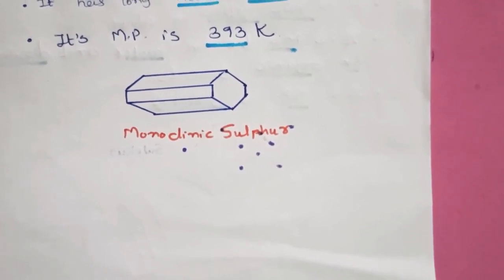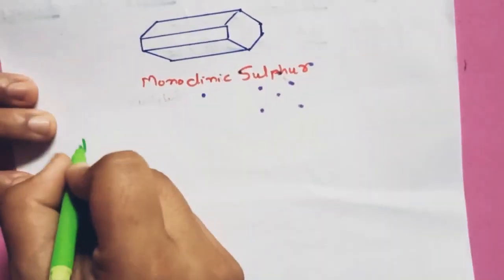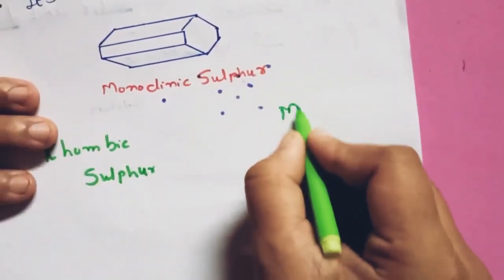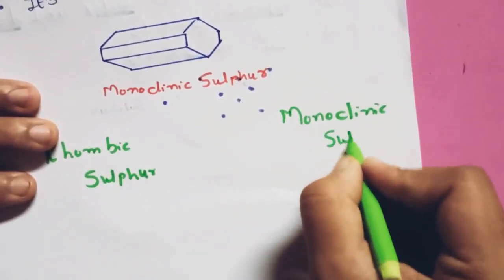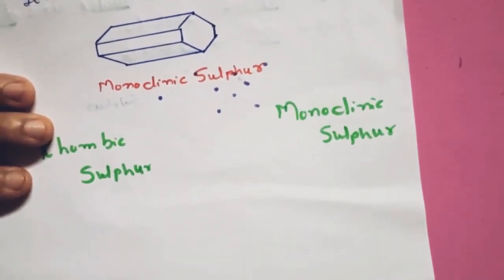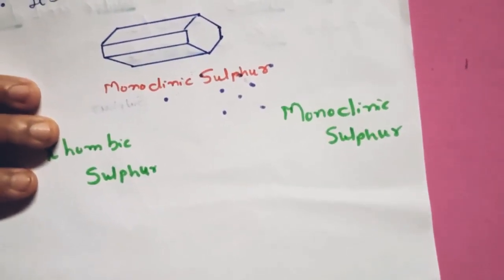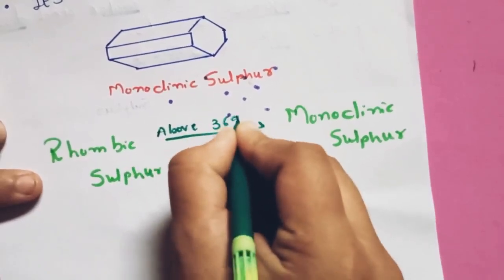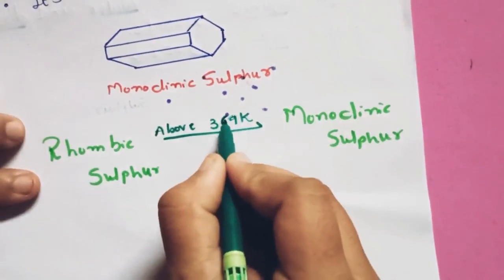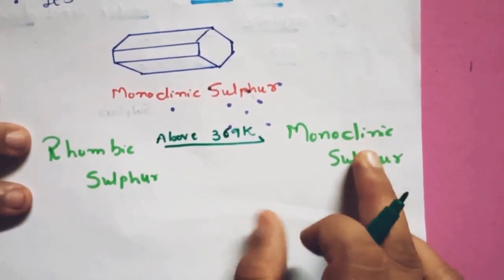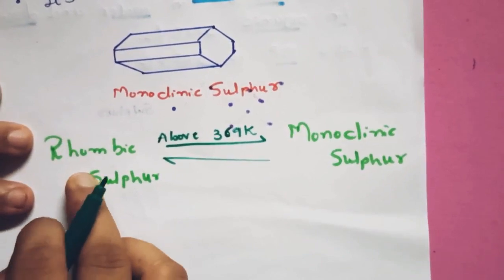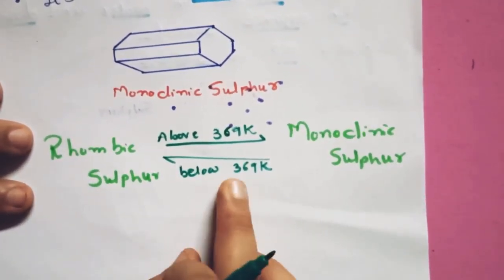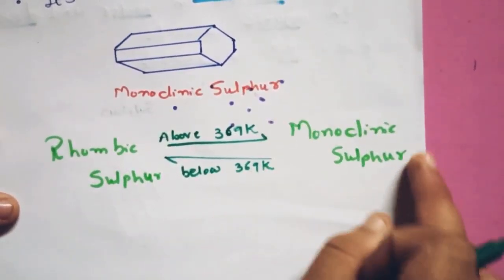That was monoclinic sulfur. The main point about both allotropes is that they can be interconverted. If you heat rhombic sulfur above 369 Kelvin, it converts to monoclinic sulfur. If you maintain temperature below 369 Kelvin, monoclinic sulfur converts back to rhombic sulfur. So below 369 K we get rhombic sulfur, and above 369 K we get monoclinic sulfur.